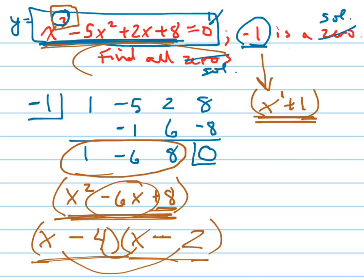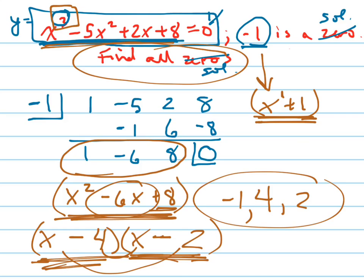So what are my solutions? Four and two. Set those equal to zero. So those are my other solutions. Negative one, four, and two are all three of my solutions to that equation.